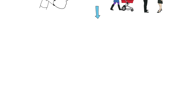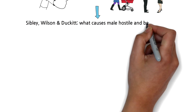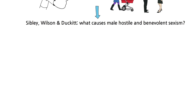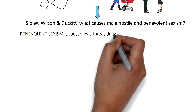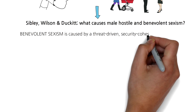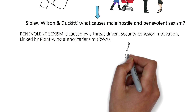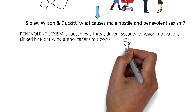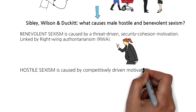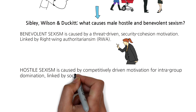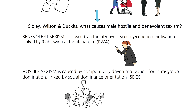Going back to the research of Sibley, Wilson and Duckett and their examining of benevolent sexism and hostile sexism, now that we've got the definitions out of the way: benevolent sexism stems from a threat-driven security cohesion motivation, and this is often created by right-wing authoritarianism, whereas hostile sexism stems from a competitively driven motivation for intergroup dominance, and this is often created by social dominance orientation.